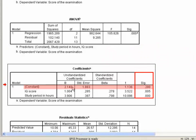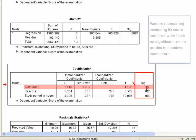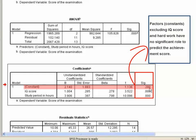However, the SIG value for constant B, 0.280, is greater than 0.05, which means the factors which are the constants excluding IQ score and hard work have no significant role to predict the achievement score.